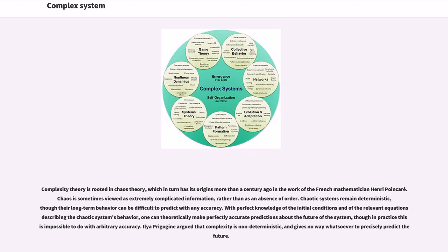Complexity theory is rooted in chaos theory, which in turn has its origins more than a century ago in the work of the French mathematician Henri Poincaré. Chaos is sometimes viewed as extremely complicated information, rather than as an absence of order. Chaotic systems remain deterministic, though their long-term behavior can be difficult to predict with any accuracy. With perfect knowledge of the initial conditions and of the relevant equations describing the chaotic system's behavior, one can theoretically make perfectly accurate predictions about the future of the system, though in practice this is impossible to do with arbitrary accuracy.